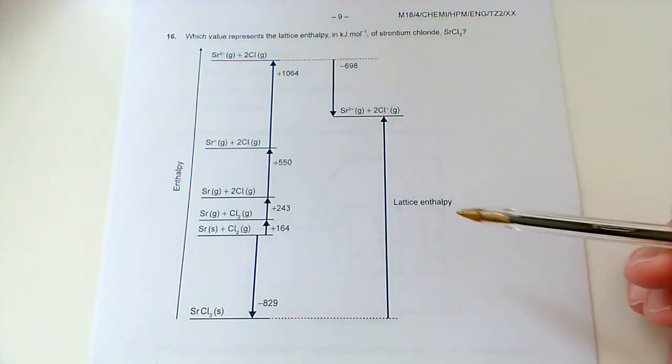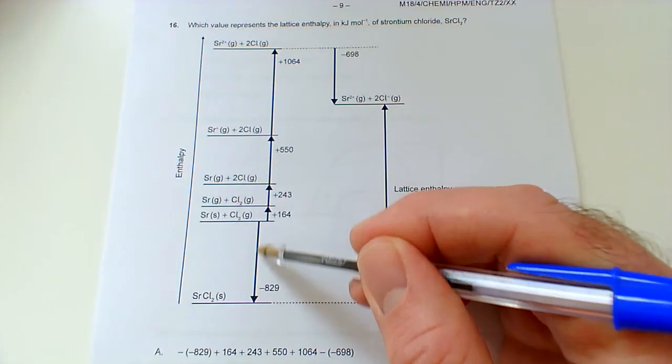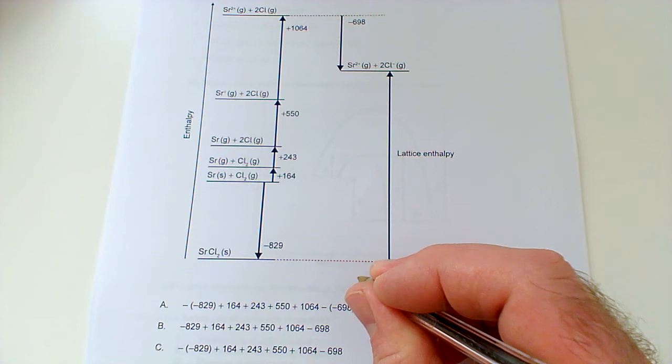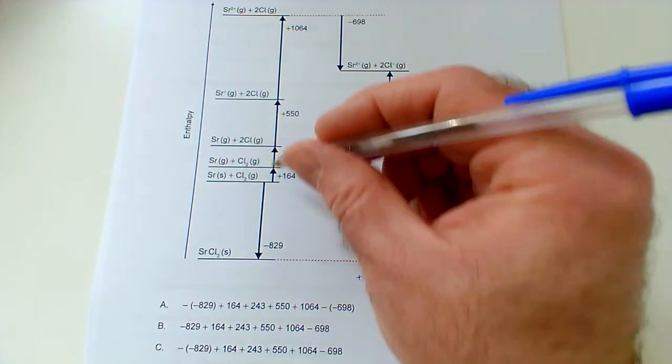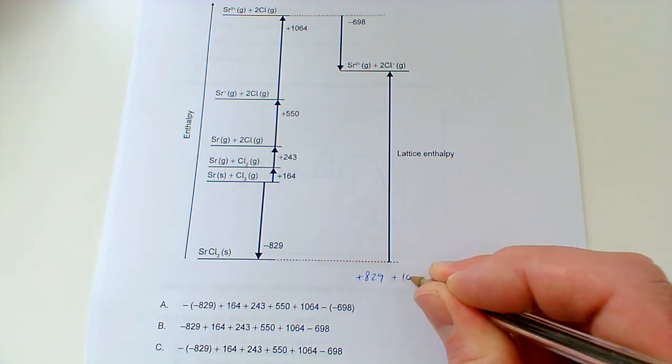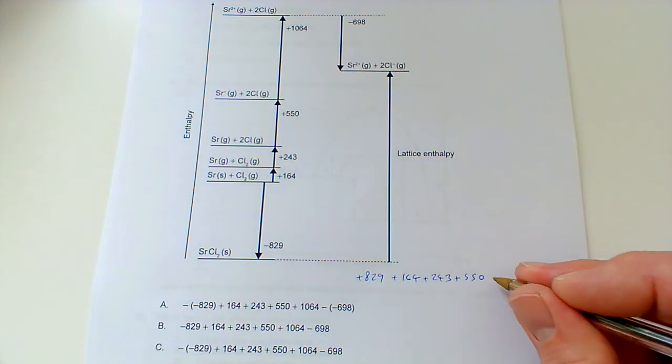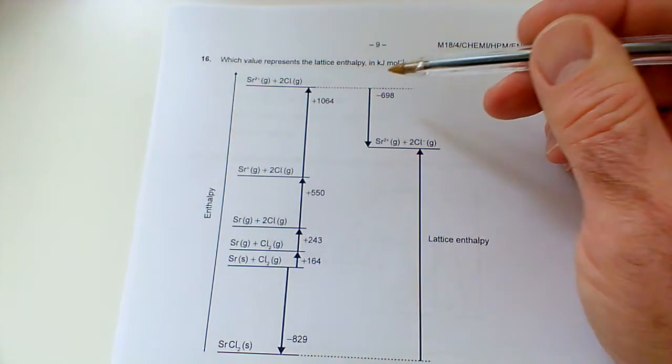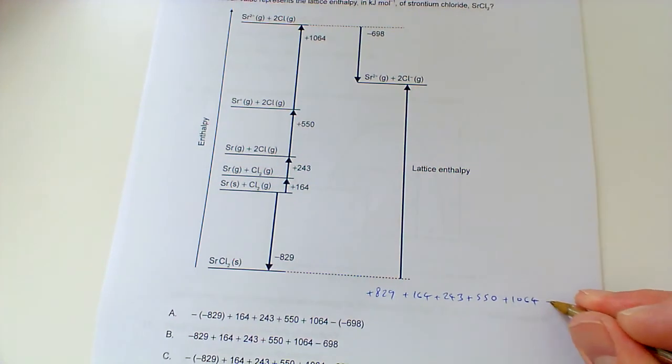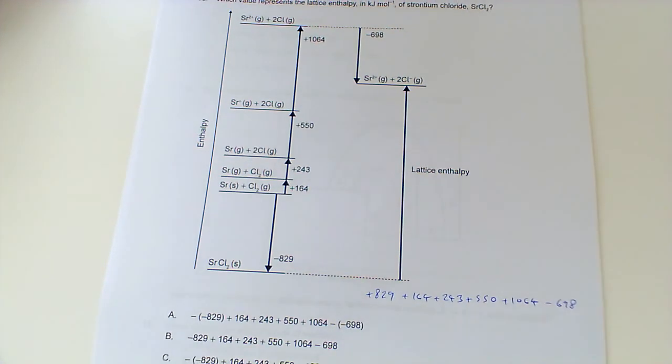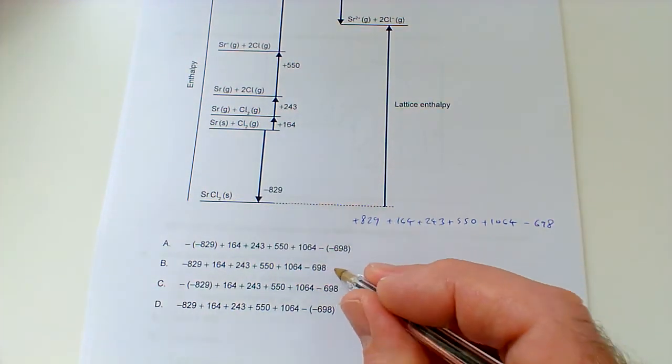Number 16: we've got a Born-Haber cycle. Which value represents the lattice enthalpy in kilojoules per mole of strontium chloride? We need to get from there to there, but we don't know that, so we've got to come up here instead. This arrow is going in the wrong direction, so we'd have to flip that, so that would become plus 829. These arrows are all going in the correct direction, so we keep those the same: plus 164, plus 243, plus 550, plus 1064. Our final arrow, we've got to come down here. That arrow is also going in the right direction, so we'd leave the sign the same, so that is minus 698. That's what we're looking for. We need a plus 829 at the start, so we can eliminate these two already.